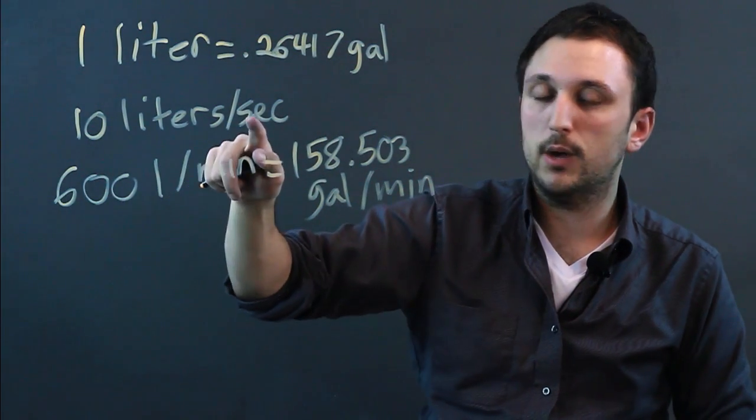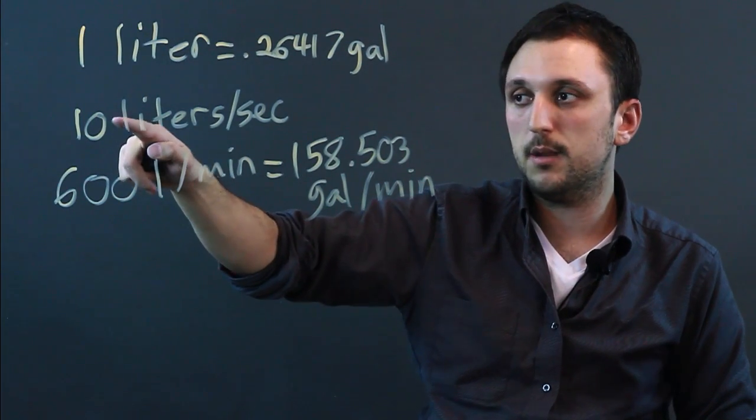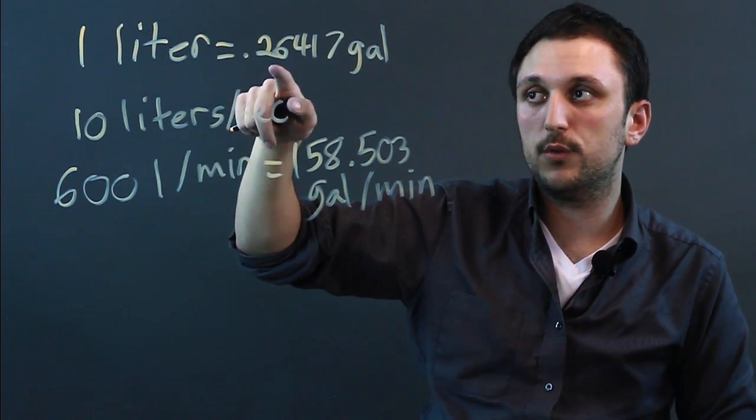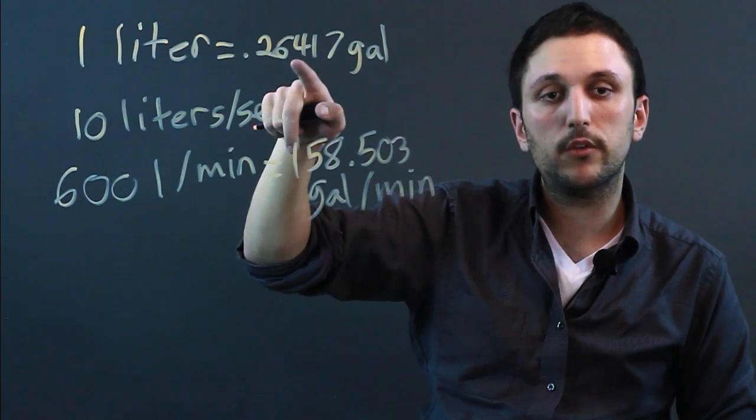No matter how many liters you have per second, you have to convert that to minutes first. So you take that number, you multiply by 60, and then you take whatever this number is and you multiply it by 0.26417.